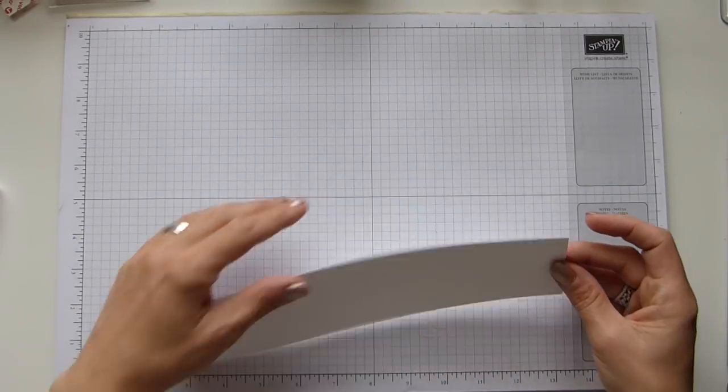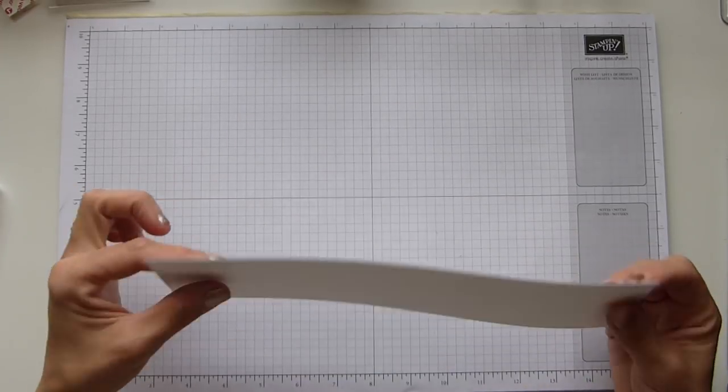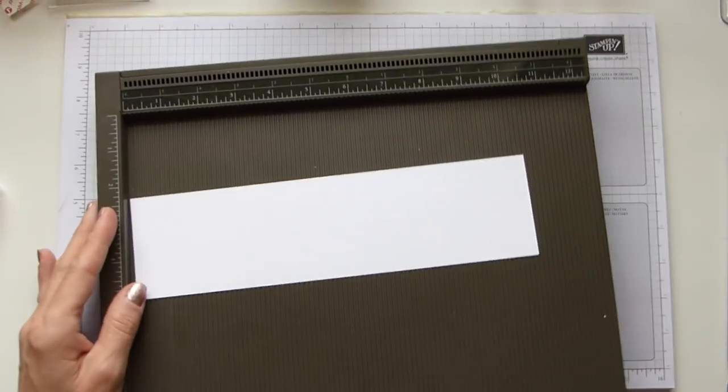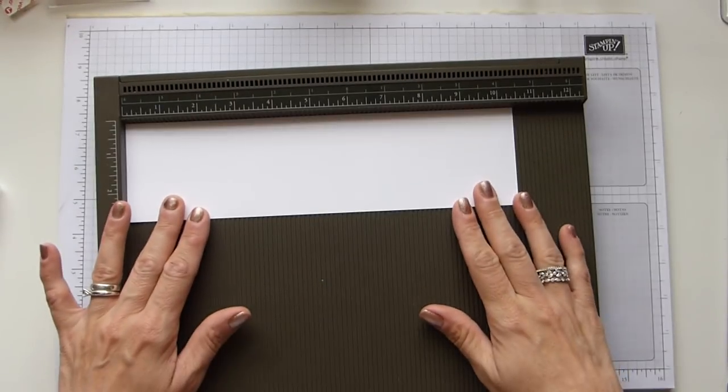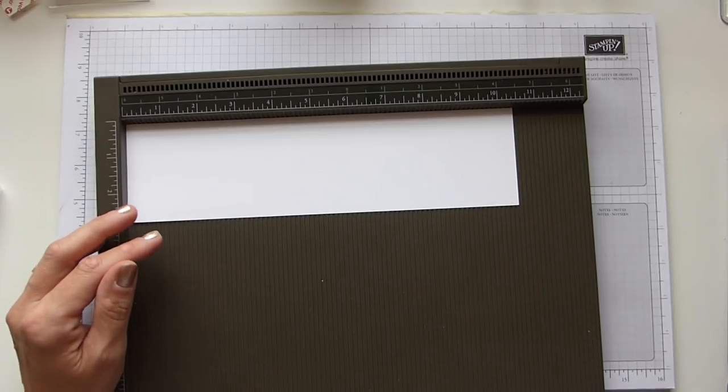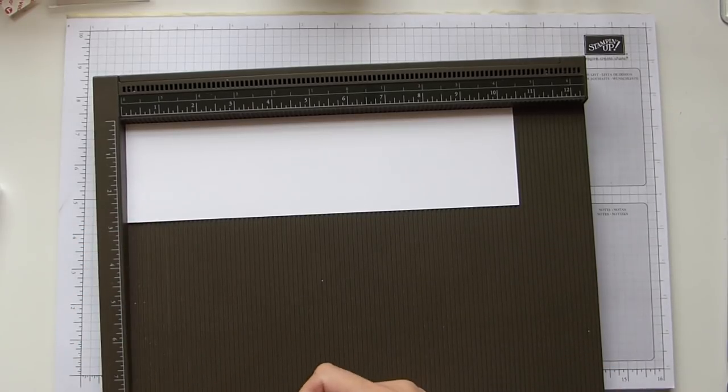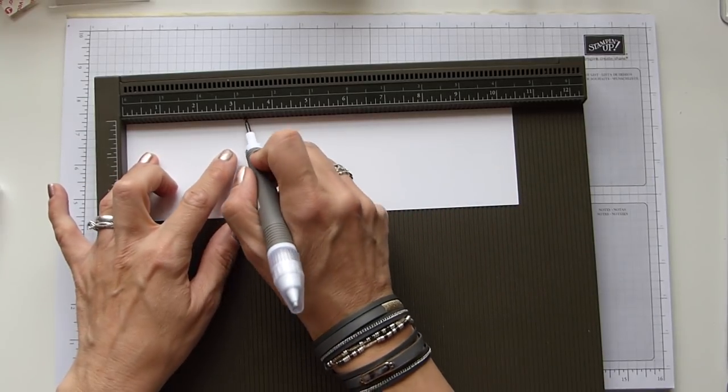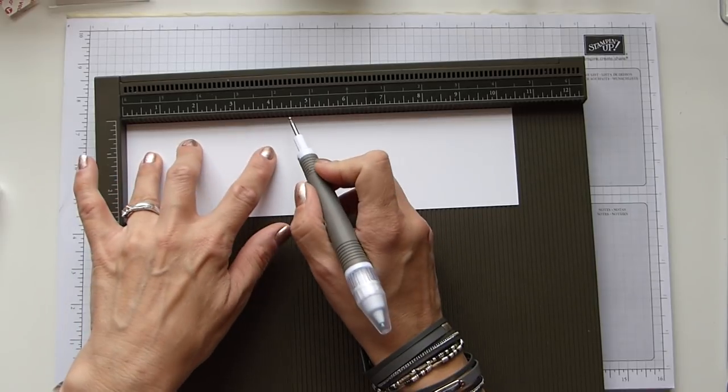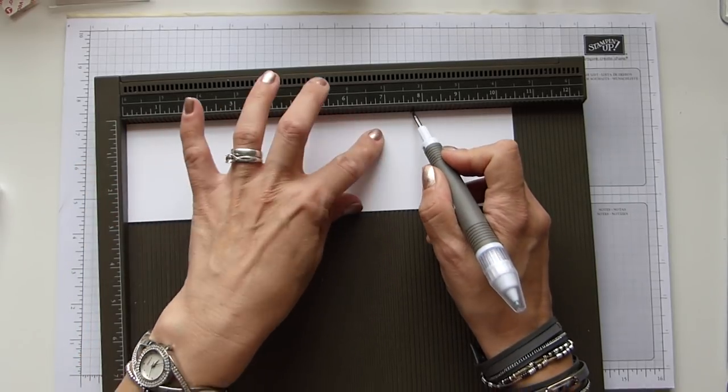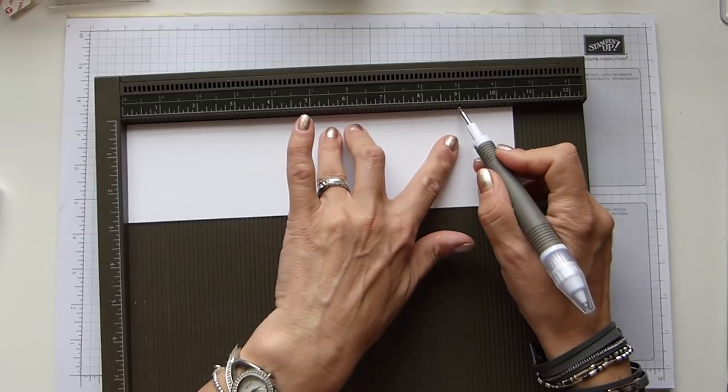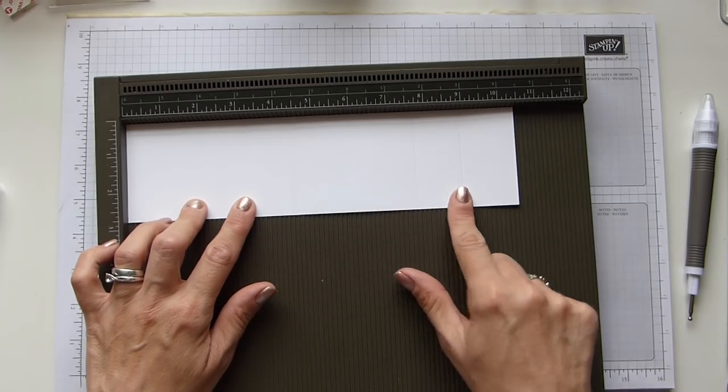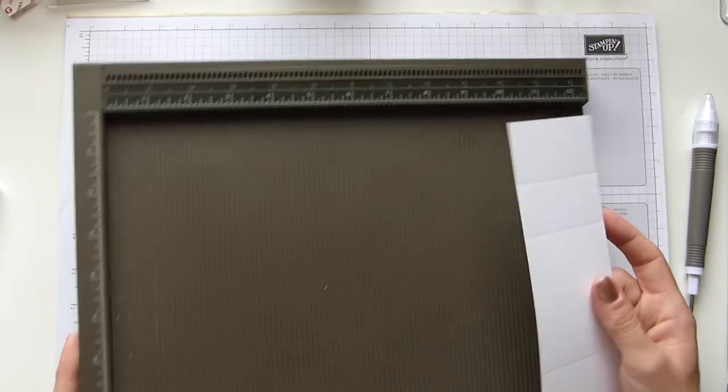To start off with, you're going to need a sheet of Whisper White. I've not used thick, only the standard. You will need a sheet of DSP that is 10 and a half by 2 and three-quarters inches in length, which is 26 by 7. On the long side, which is the only side that we score, we are scoring at 3 and a quarter, 4 and a half, 7 and three-quarters, and 9. In centimeters, that is 8, 11, 19, and 22.